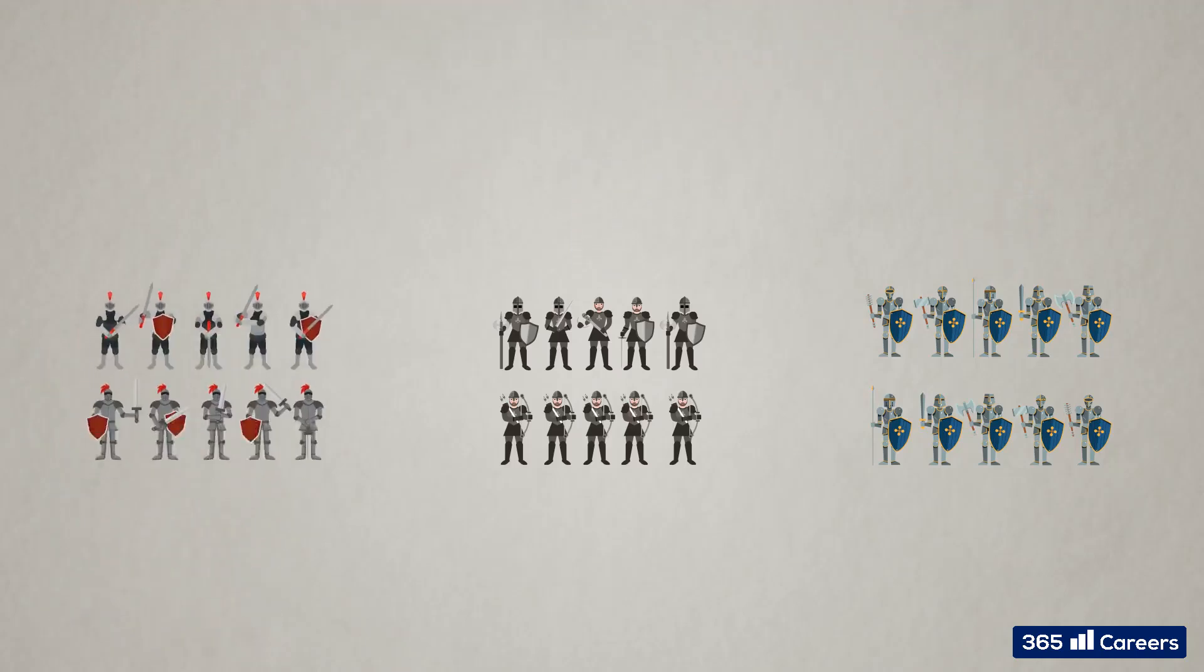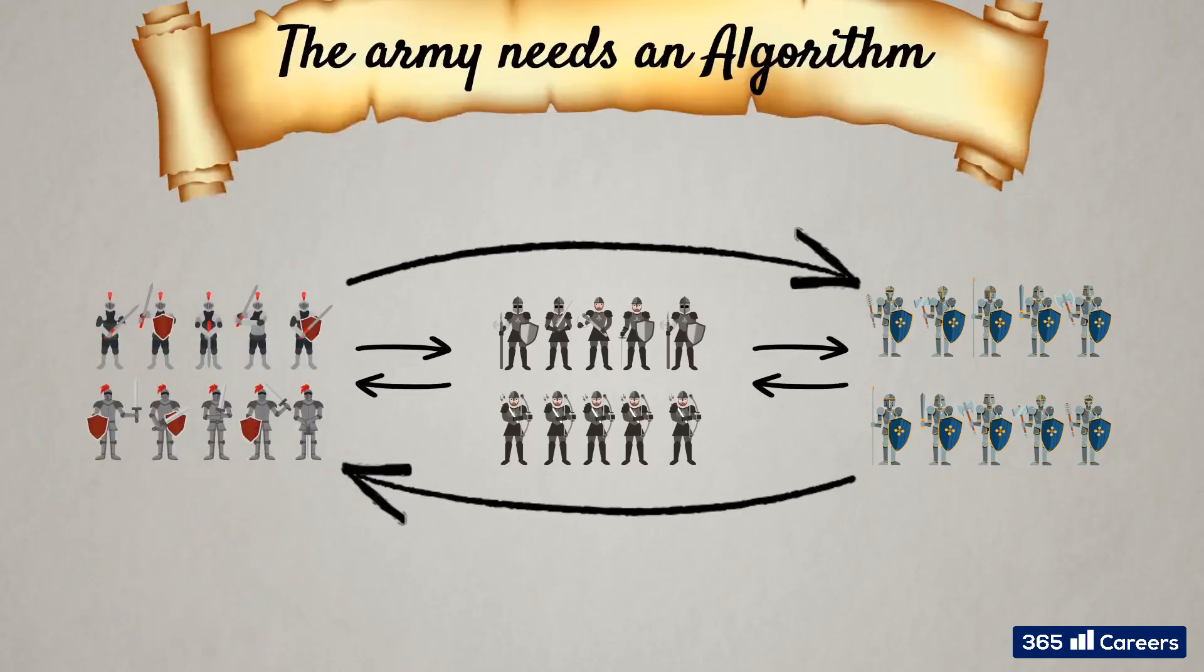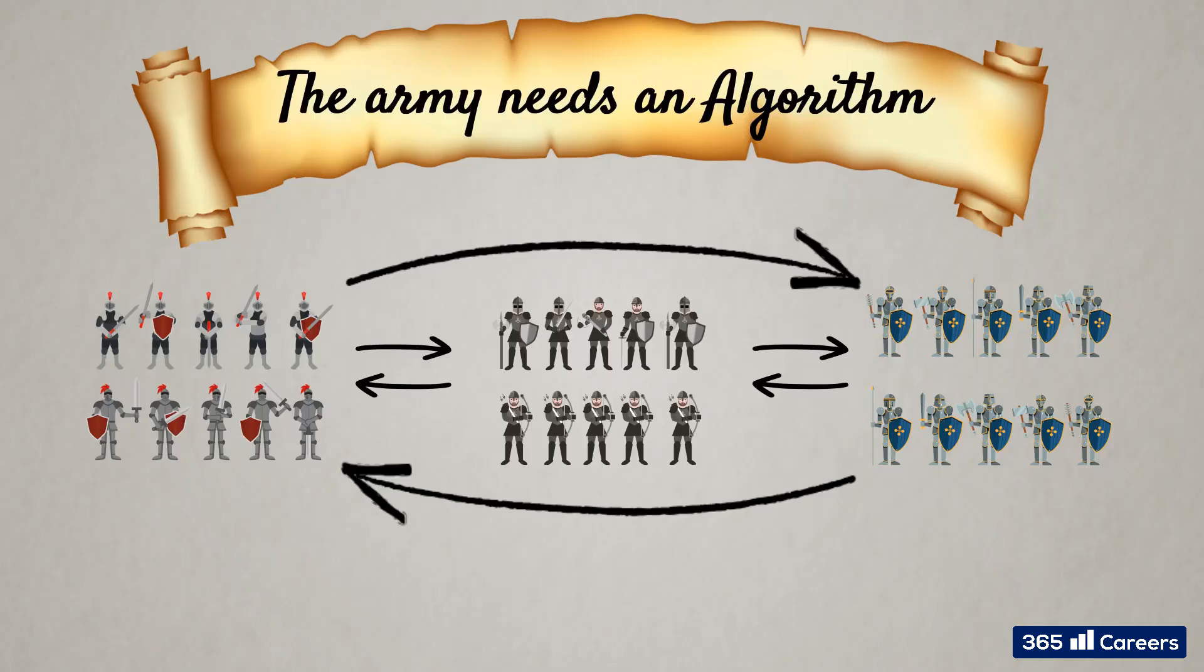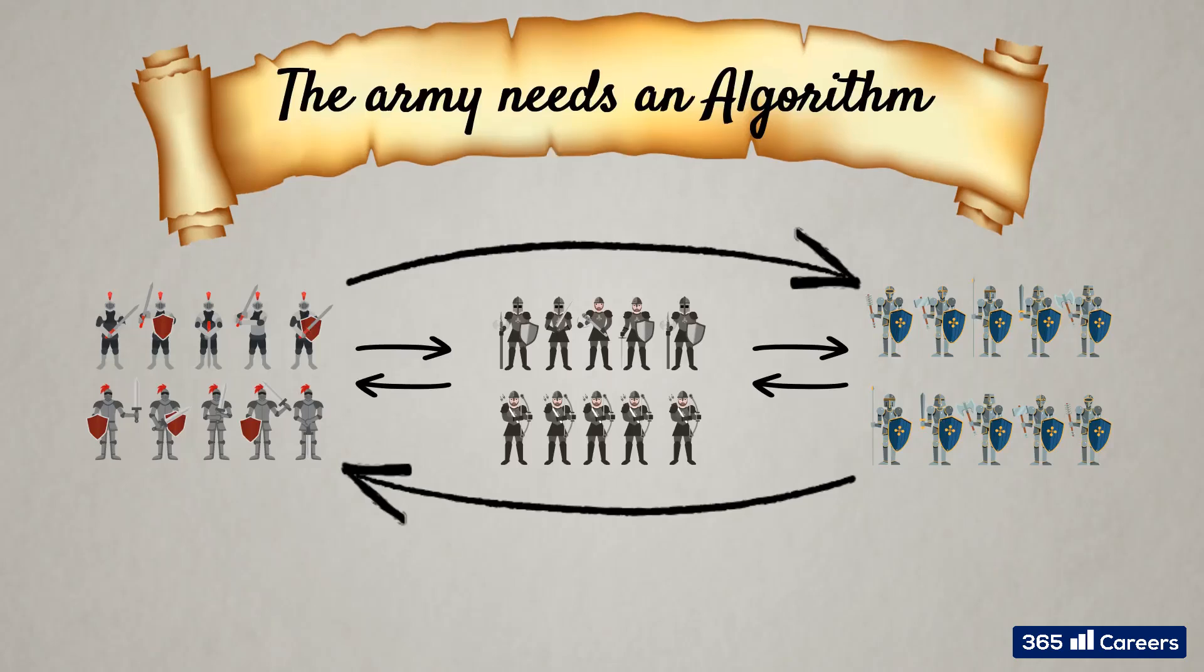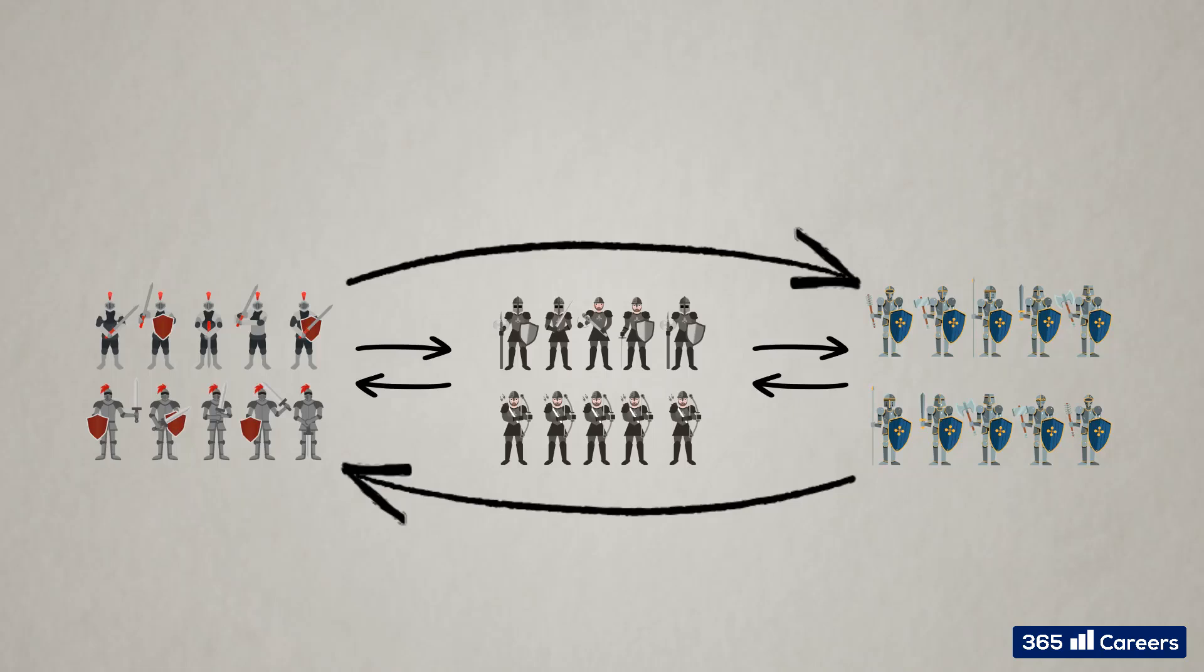To find a successful solution to this conundrum, the Byzantine army needs to find its path to coordinated action one way or another. To achieve this, the Byzantine army needs an algorithm that works effectively towards a coordinated outcome where the loyal generals follow it and the traitors don't.